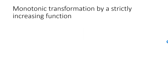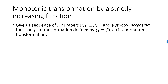Here is one way of creating a monotonic transformation: if I create a transformation using a strictly increasing function f, such that yi equals f(xi) for all i between 1 and n, then this transformation will be monotonic. It is enough that my function is strictly increasing on the domain containing the sequence of numbers I begin with.